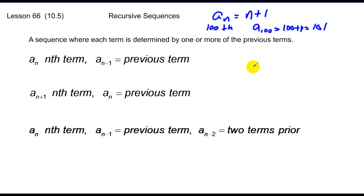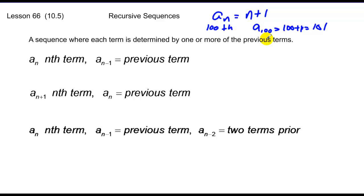If I want the hundred and first term of a recursive sequence, I can't do that. A recursive sequence is where each term is determined by one or more of its previous terms. So in order to get the hundredth term for a recursive sequence, I need the 99th term or maybe the 98th term. I can't just plug in the term number and get that value out.